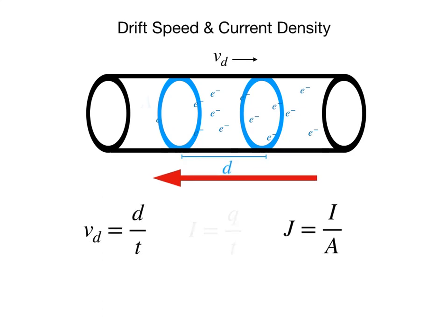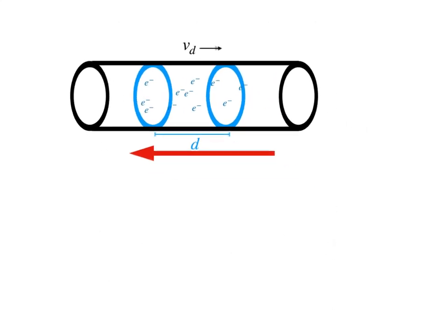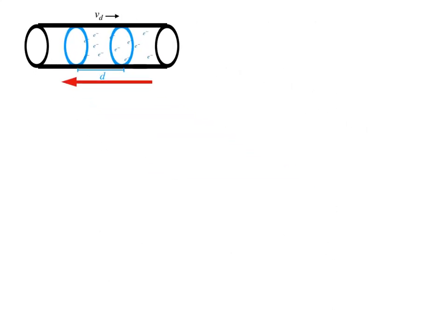We will now begin to put it all together by reviewing the equations so far for drift speed, current, and current density. Please remember that many of these values are vectors and that we are looking at the scalar quantities for simplicity. We will start the derivation with charge density, which is defined as the number of charged particles per volume. In this case, it's just the number of electrons in the region of the wire that we are isolating.